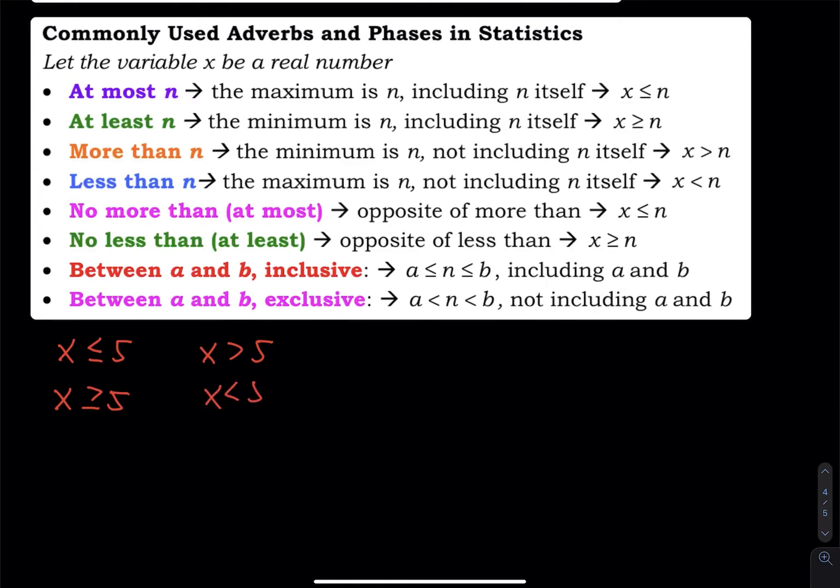Less than 5, so the maximum you have is 4, not 5. 5 is not less than 5. And then 'no more than' is the same thing as 'at most.' So if you put a 'no' right in front of 'more than,' that means you take the opposite: less than or equal to, which is equal to at most. And then 'no less than,' the opposite of less than is greater than or equal to, which is at least.